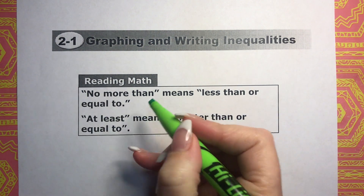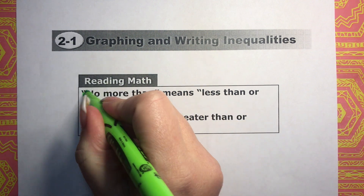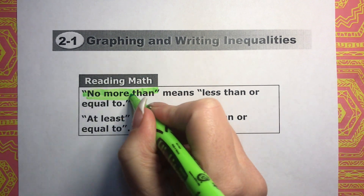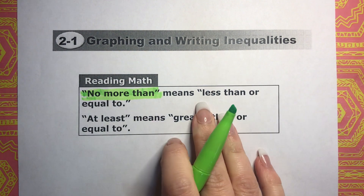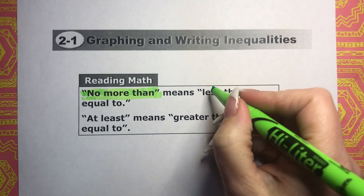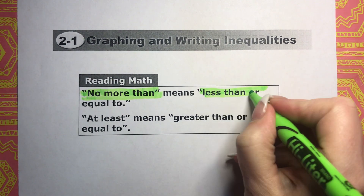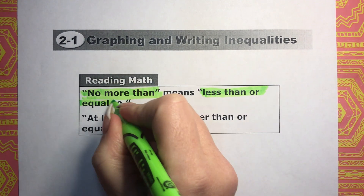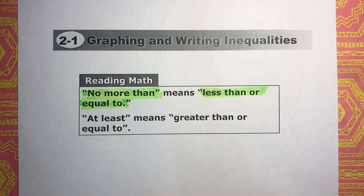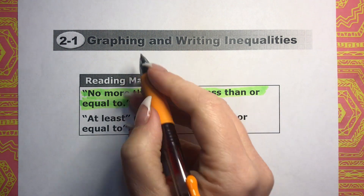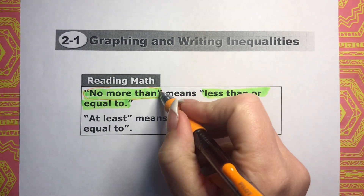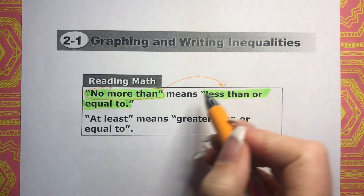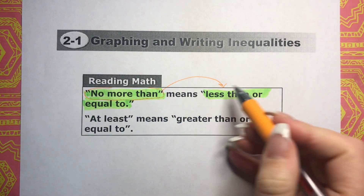In some of the applications, you're going to see something that says 'no more than.' When you see 'no more than,' what you need to know is that it means less than or equal to. So 'no more than' is that keyword and it can be translated into the inequality of less than or equal to.